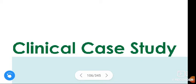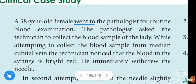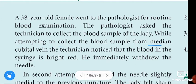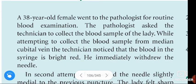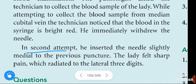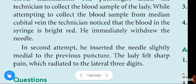Hi friends, in this video we are going to learn about a clinical case study about the faults done during blood sample collection. A 38-year-old female went to the pathologist for routine blood examination. The pathologist asked the technician to collect blood from the lady. While attempting to collect the blood sample from the median cubital vein, the technician noticed that the blood in the syringe is bright red. He immediately withdrew the needle. In the second attempt, he inserted the needle slightly medial to the previous puncture. The lady felt sharp pain which radiated to the lateral three digits.